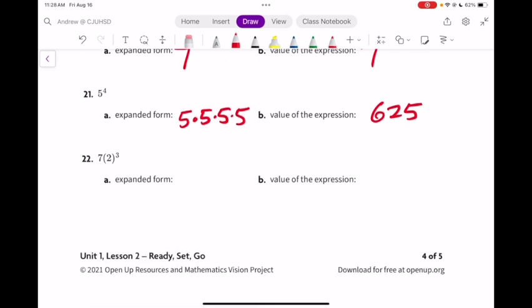The expanded form is 7 times 2, and how many 2's? 3 2's, because the exponent is 3. Again, how do we get the value? We multiply it out, or we put it in the calculator. The value will be 56.